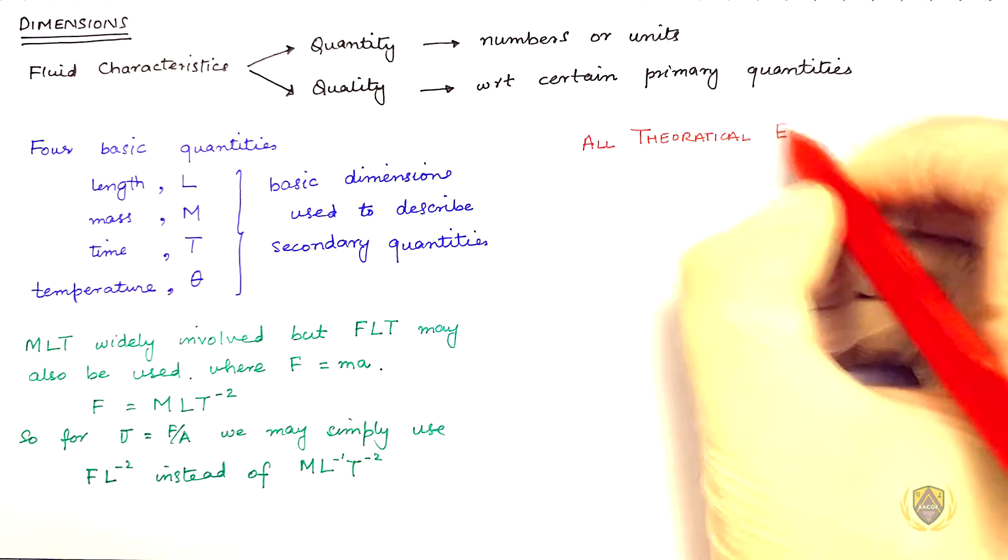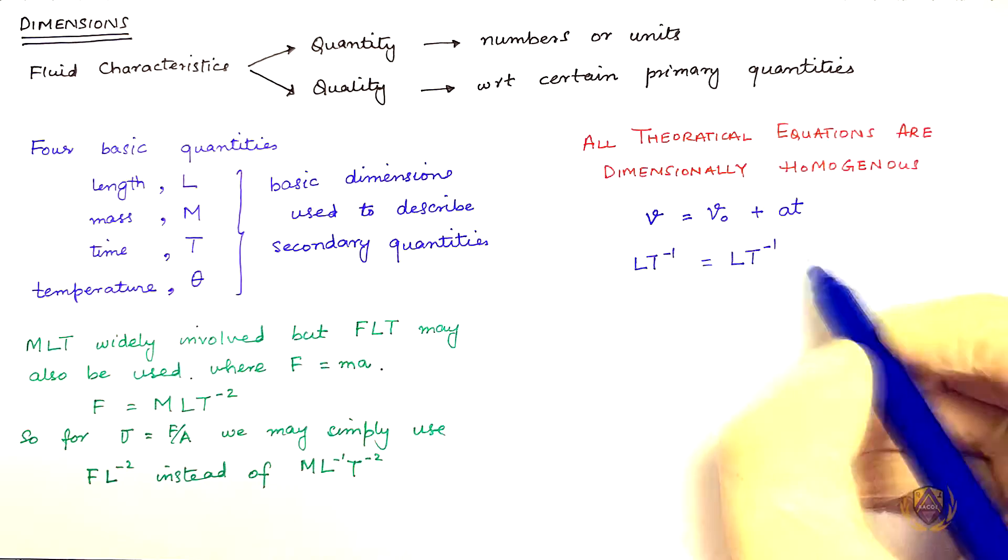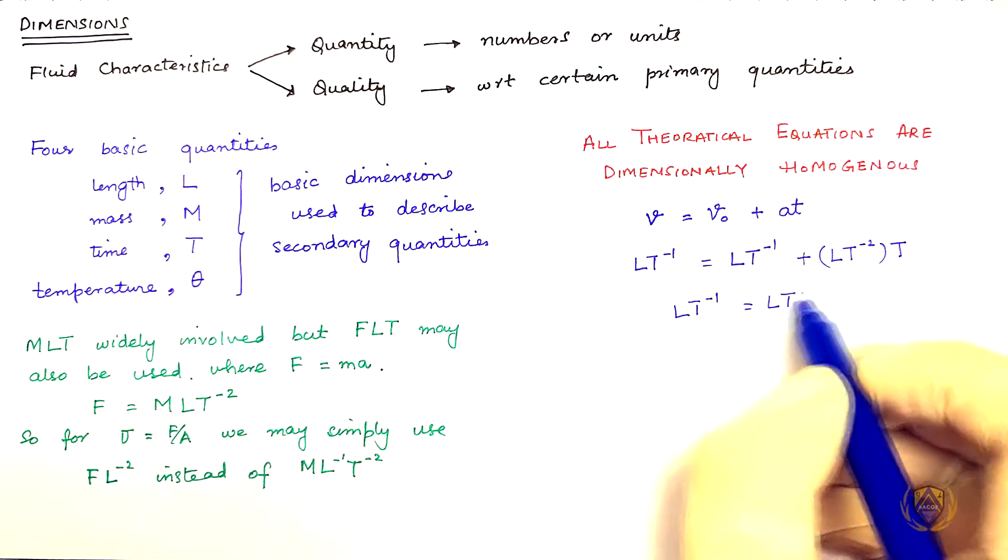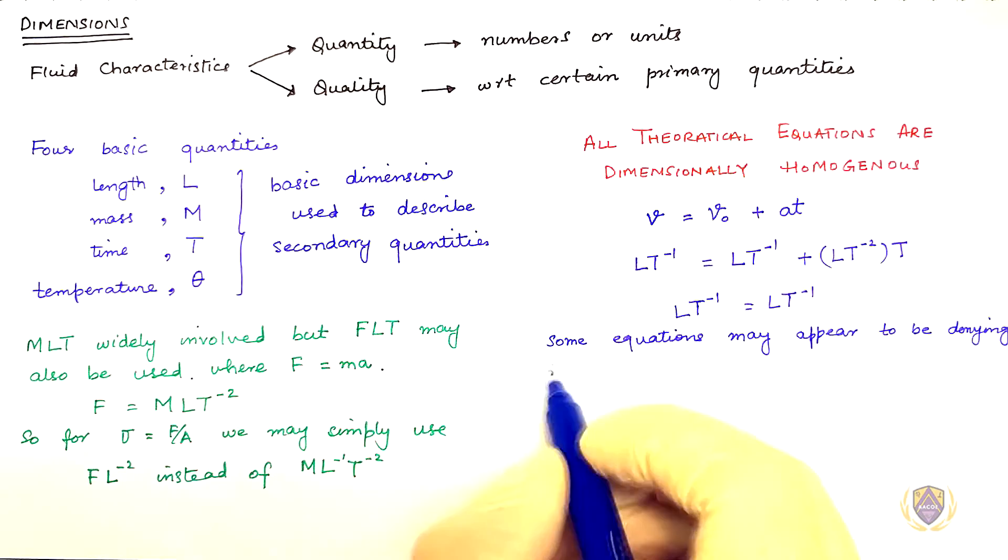All theoretical equations are dimensionally homogenous. V equal V naught plus A T. Here L T minus 1 equals L T minus 1.